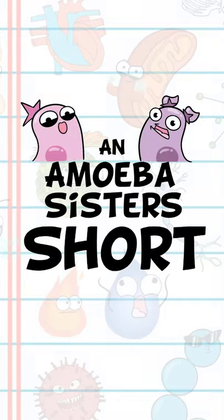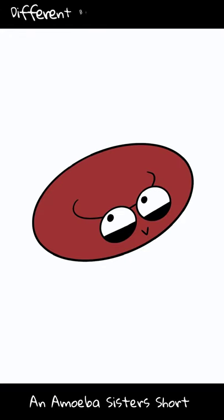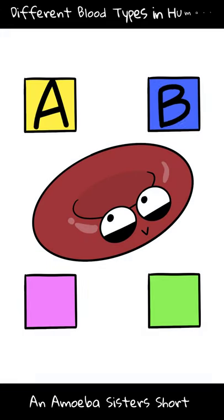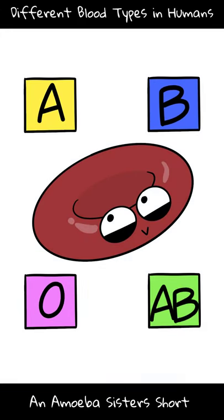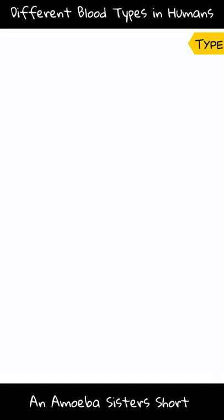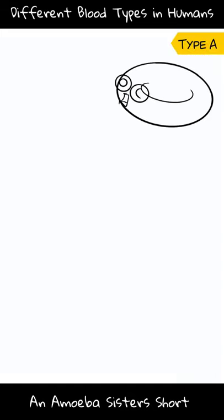Welcome to an Amoeba Sister Short. What does it mean when we say ABO or AB blood types? These are based on the sugar antigens on the surface of red blood cells.